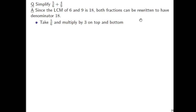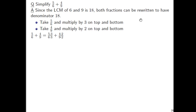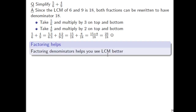We can rewrite both fractions to have a denominator of 18. Please be careful with notation. The first fraction, 5/6, we multiply top and bottom by 3. The second fraction has a denominator of 9, so we multiply top and bottom by 2. Be sure to write the times 3 on top and bottom of 5/6, and times 2 on top and bottom of 4/9 — writing it only on one side has a different meaning in mathematics. So we get 15/18 plus 8/18, which gives 23/18.